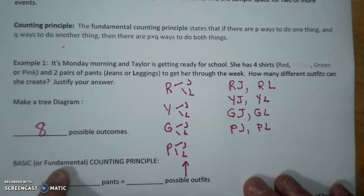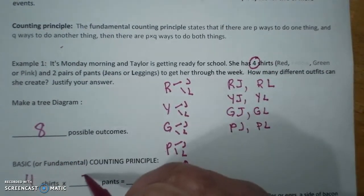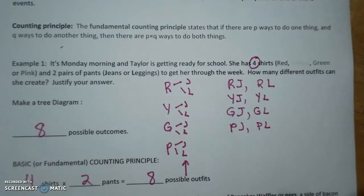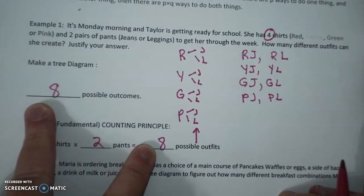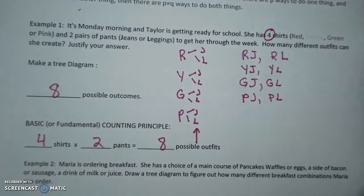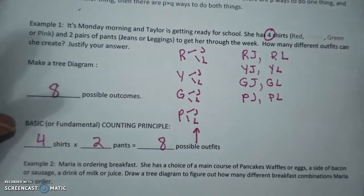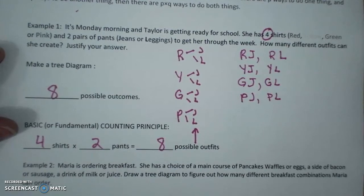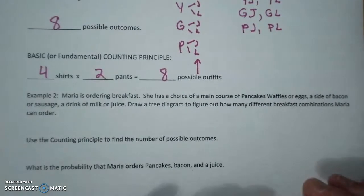And the basic fundamental counting principle says if I have P, which is four shirts, times two pants gives me eight possible outfits. Notice I have eight possible outcomes or eight possible outfits. This is used in ordering sandwiches, ordering meals, ordering three sides.